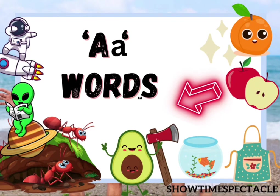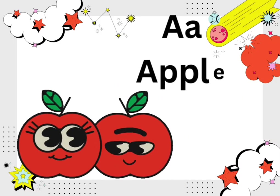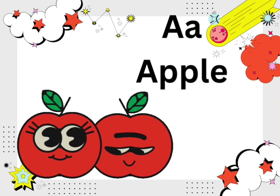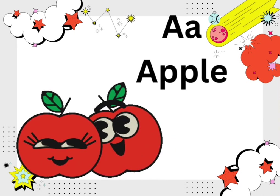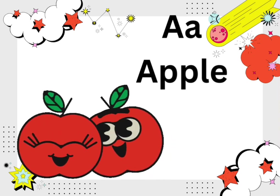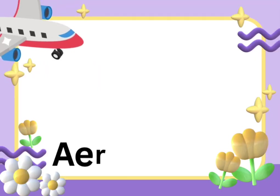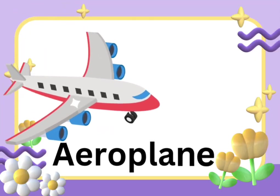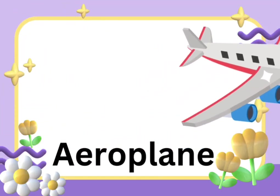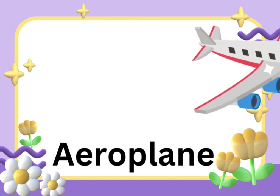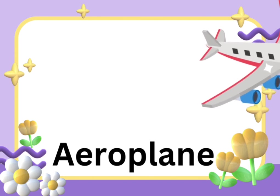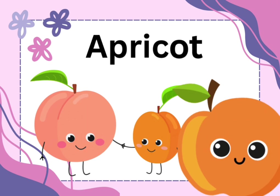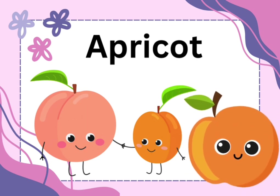Words that start with letter A. A is for apple, a a apple. A is for airplane, a a airplane. A is for apricot, a a apricot.